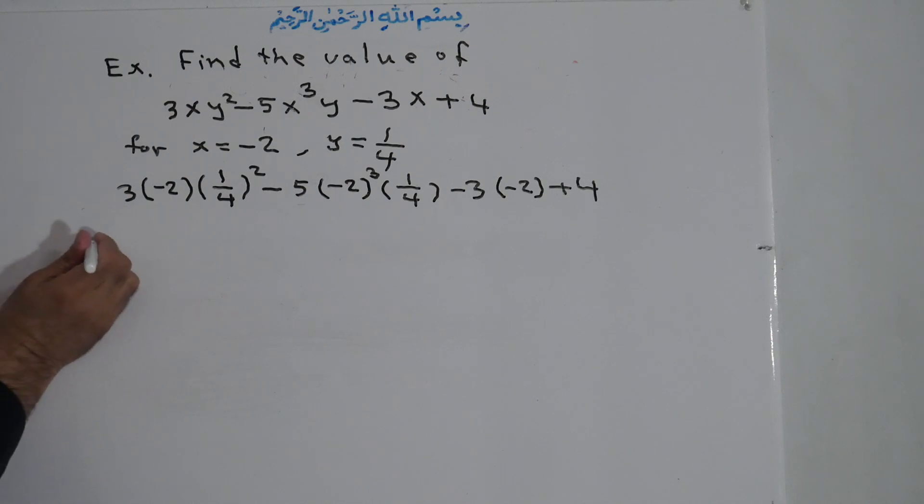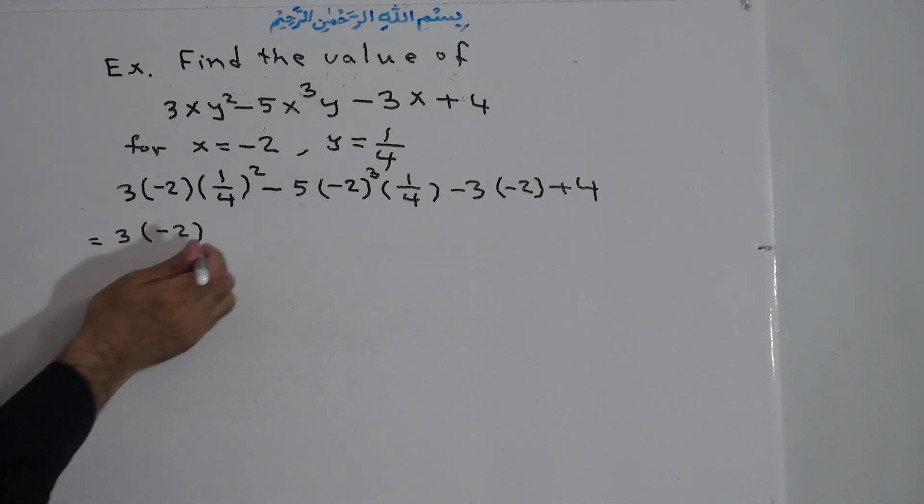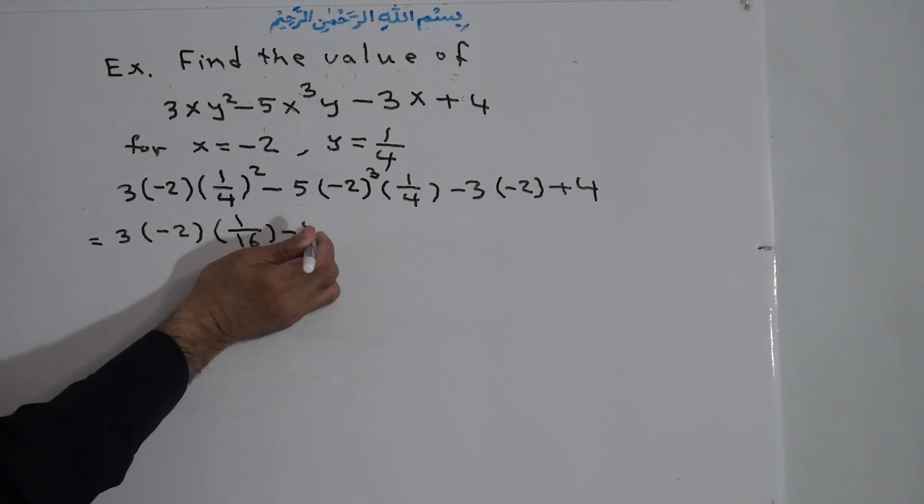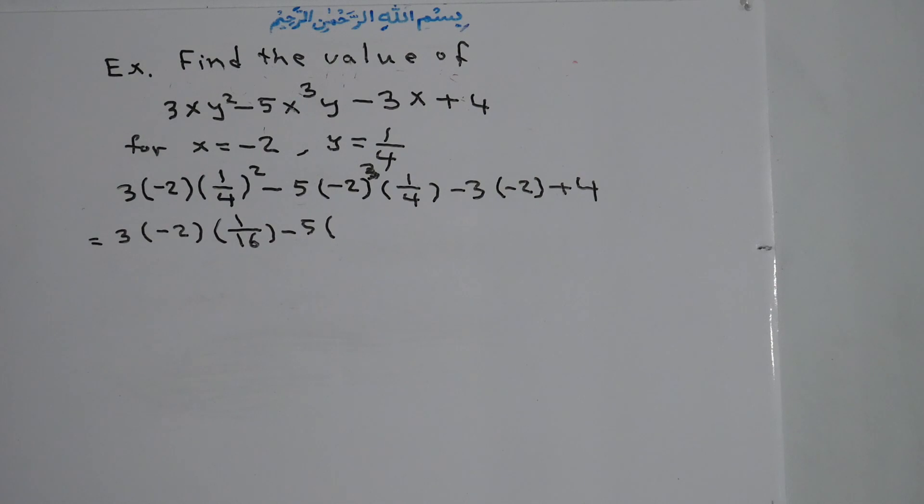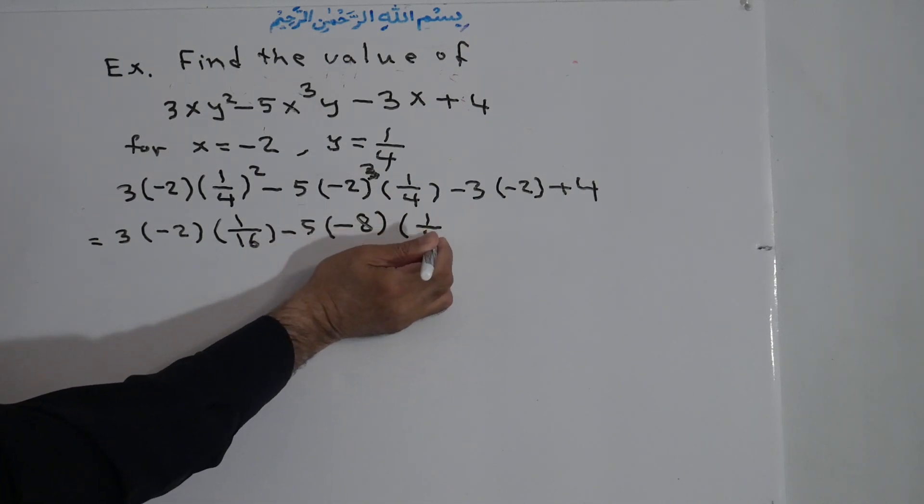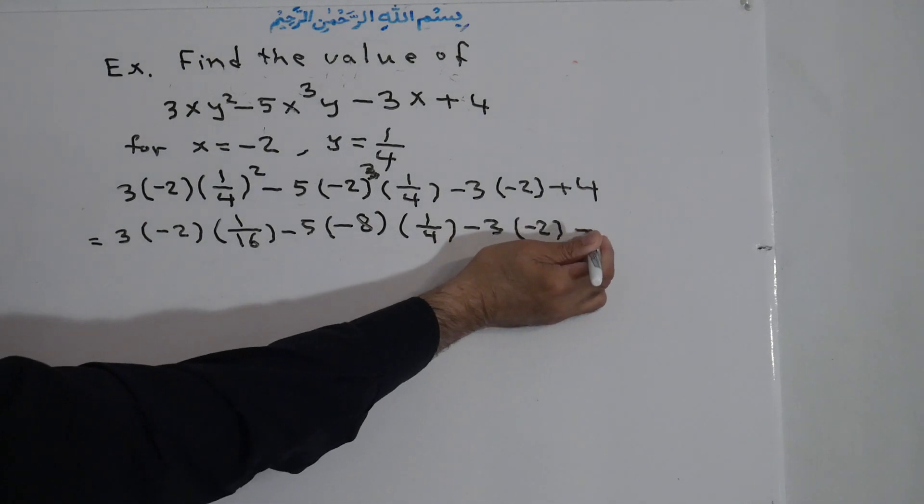Now we simplify this: 3(-2)(1/4)² means 1/4 times 1/4, 1 times 1 is 1, 4 times 4 is 16. 1/16, 1/16 minus 5, -2 to the power of 3 is -2 times -2 times -2. Three times minus, because this is an odd number, is minus. -2 times 2 is 4 times 2 is 8, times 1/4 minus 3 times -2 plus 4.